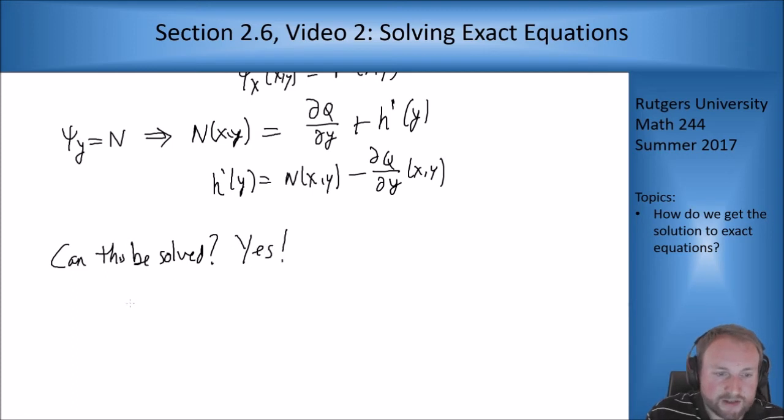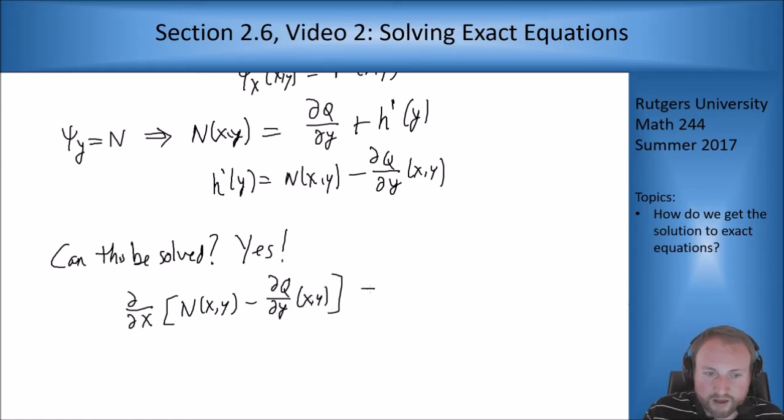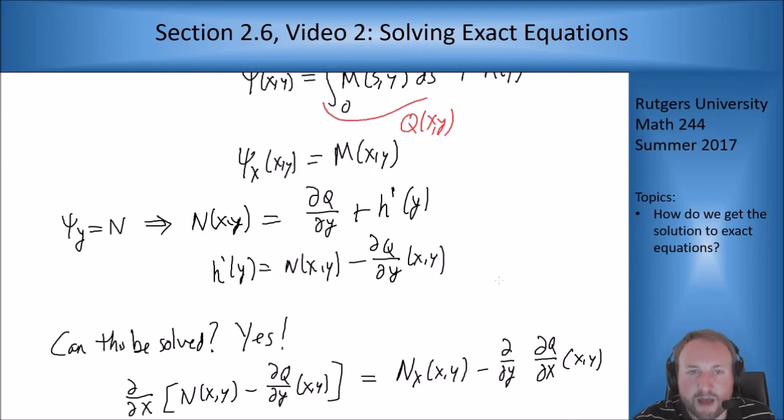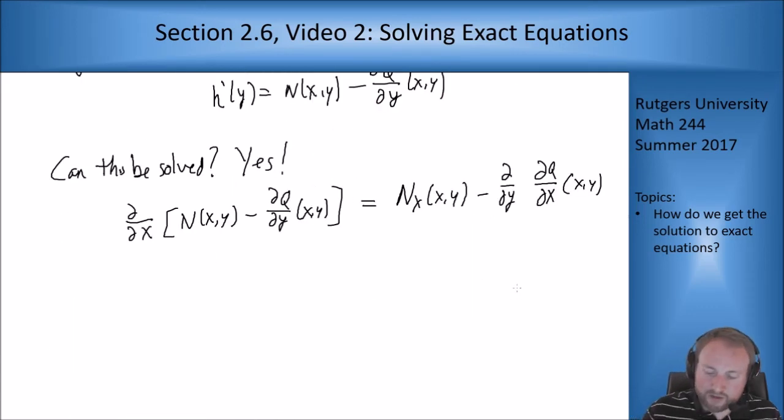Yes, because if I take the x derivative of N(x,y) minus dq/dy, I get N_x(x,y) minus, and now I'm going to switch the order of integration, differentiation. So I get d/dy of dq/dx(x,y). But we know what dq/dx is. That's from right above. dq/dx was M. That's how we defined this equation. So this turns into N_x(x,y) minus M_y(x,y). And we know that's zero because our equation was exact.